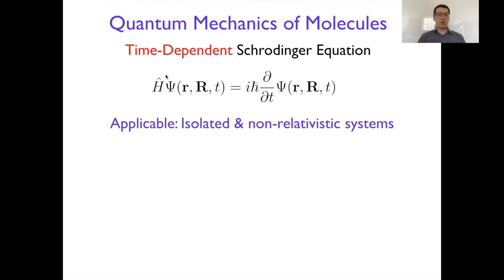We have a Hamiltonian here, the molecule, and small r's will be variables for the electrons, big R's nuclear variables, t is for time.